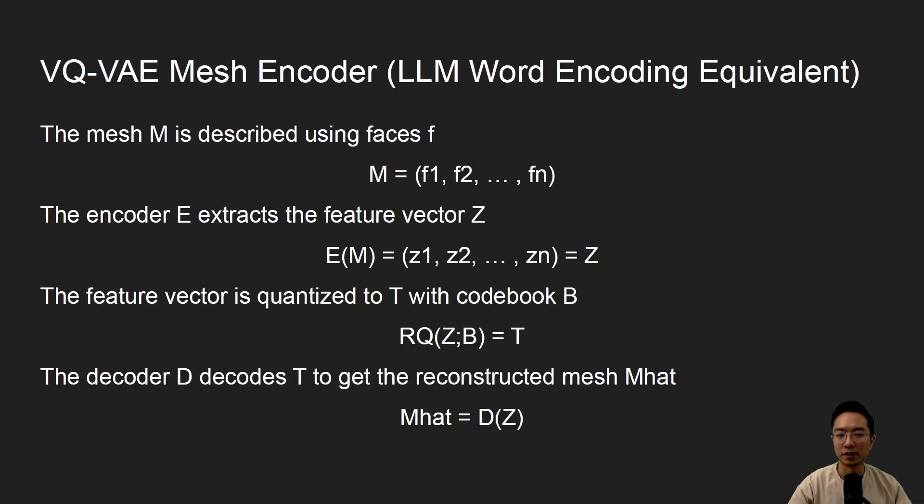So the VQ-VAE mesh encoder is one of the main parts of this Mesh Anything, and it's kind of the equivalent to the LLM word encoding. So a lot of things that we see, like ChatGPT, it uses that similar concept, but now instead we're actually encoding the faces for the words. So that's kind of what we're doing. So the main idea is you have a mesh and you describe it with faces, so f1, f2, to fn, and then your encoder extracts the feature vector, which we call z. So these are the z's here, and then the feature vector is quantized to t with codebook b, and once you get this t, you're going to pass it into the decoder, and then you're going to get your reconstructed mesh.